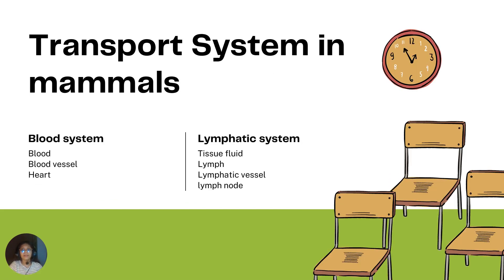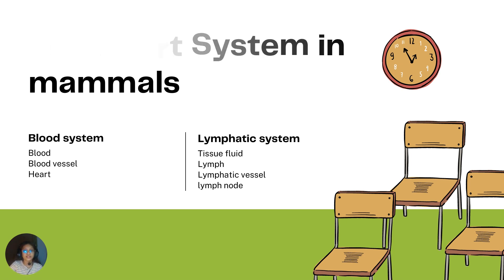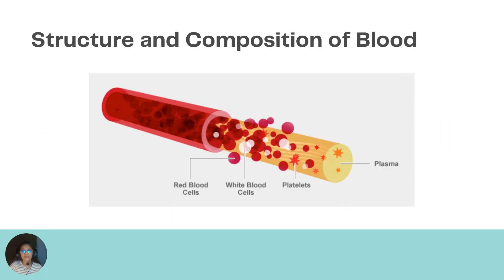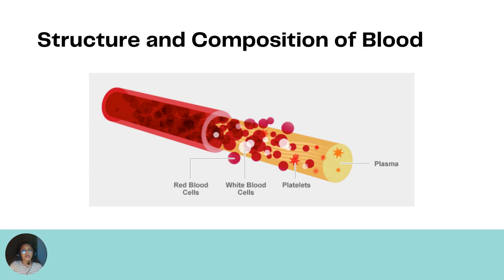In humans or mammals, we have two transport systems: the blood system and the lymphatic system. In this video, we will be starting with the blood system and will come back to the lymphatic system later.